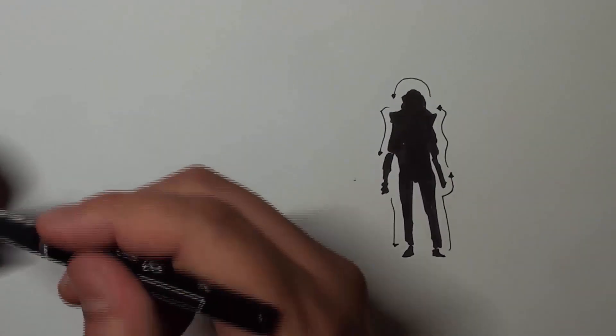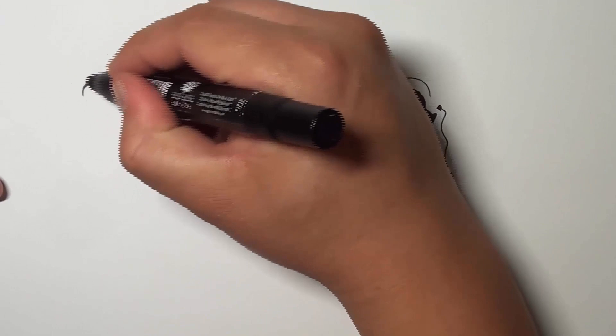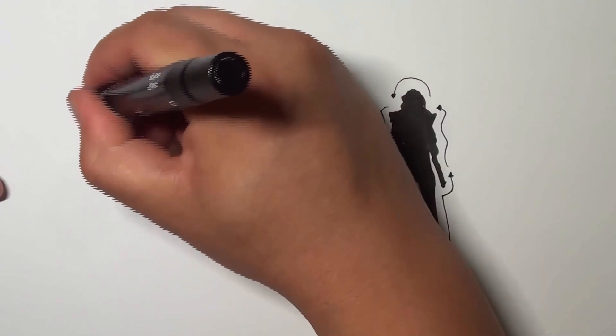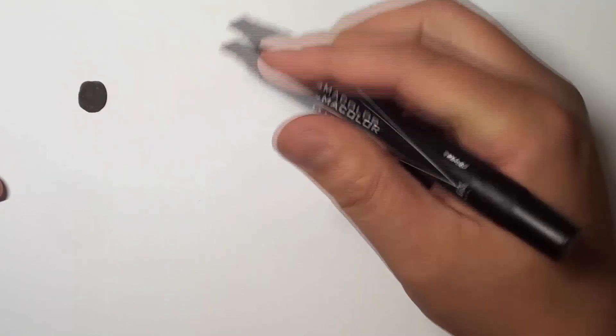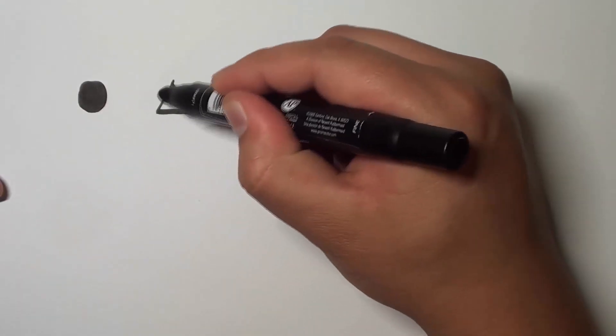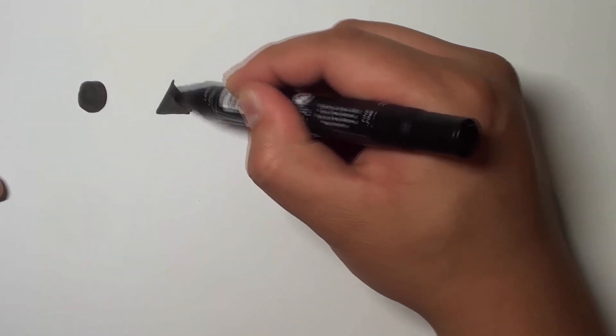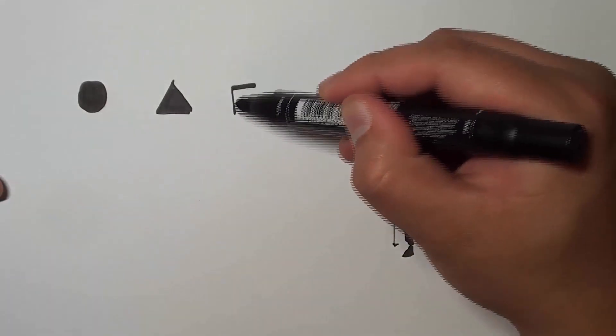So we're going to start off by thinking about three basic primitive shapes. And those basic primitive shapes are circle, triangle, last but not least, the square.